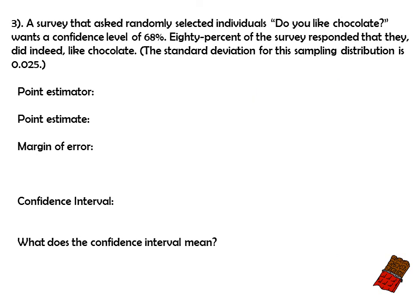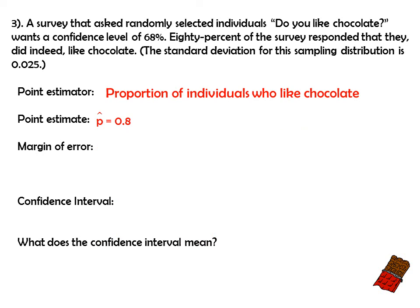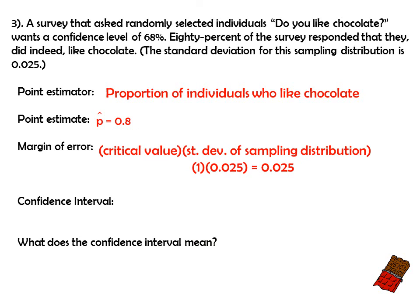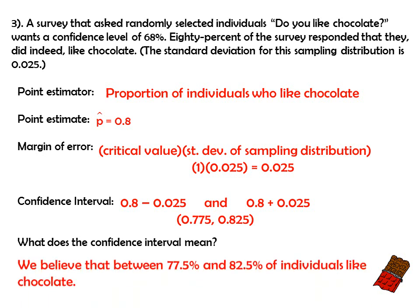Now, the same chocolate survey but with a confidence level of 68%. The point estimate is the same — p-hat equals 0.8 — but the margin of error changes. Since 68% is within one standard deviation of the mean, the critical value is 1. The standard deviation is still 0.025, so the margin of error is ±0.025. Our confidence interval is 0.775 to 0.825, meaning we believe between 77.5% and 82.5% of individuals like chocolate.